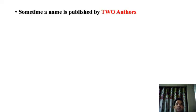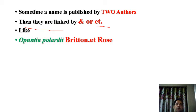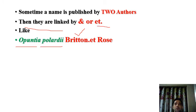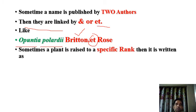Another case is when a plant is published by two authors. When more than one author is present, an '&' is placed between the authors. For example, Opuntia polyacantha — this plant was published by Britton and Rose. As there are two scientists, '&' is written between them.